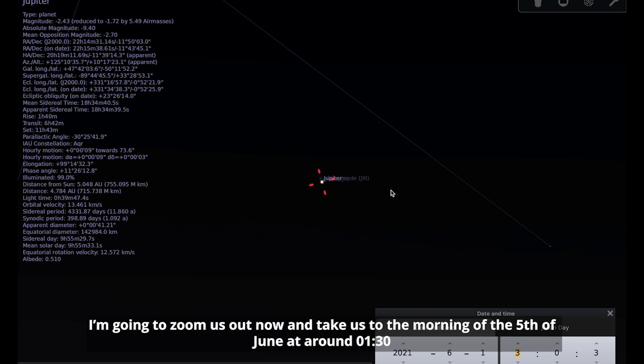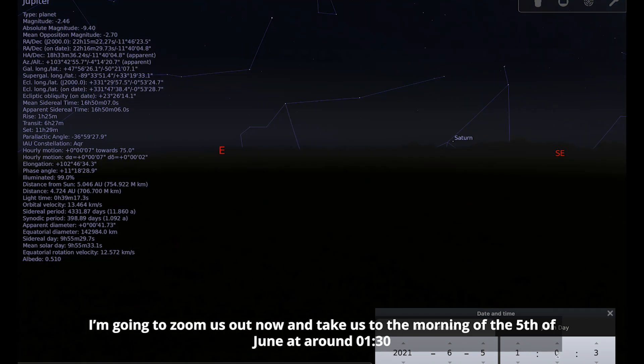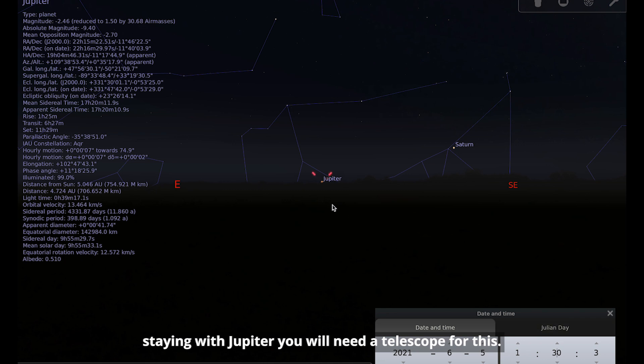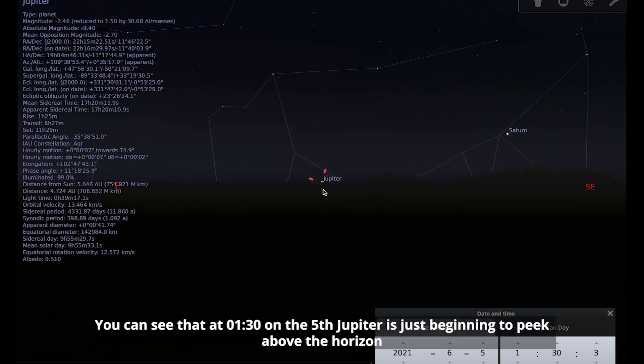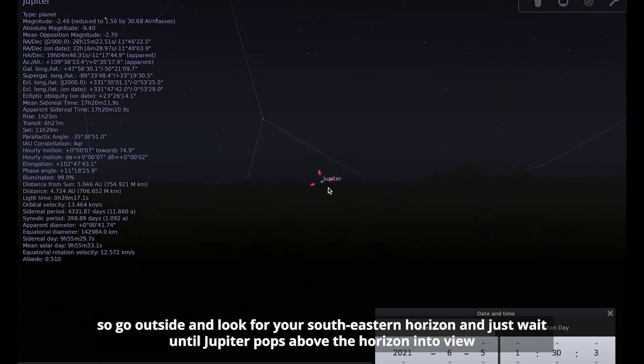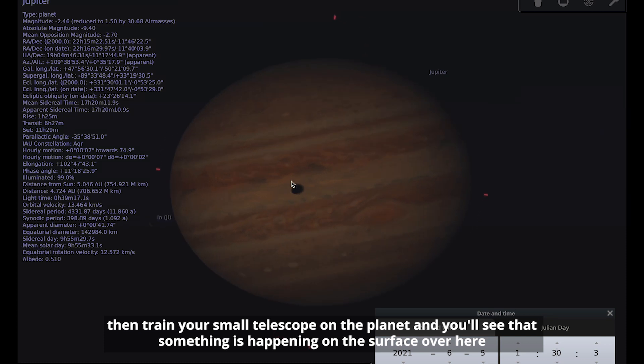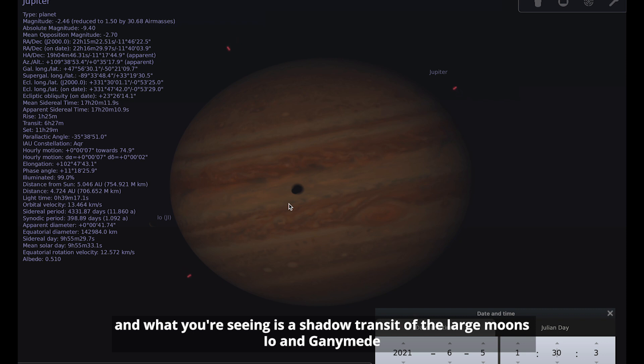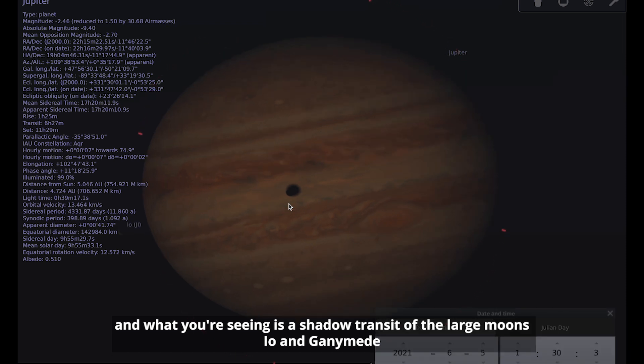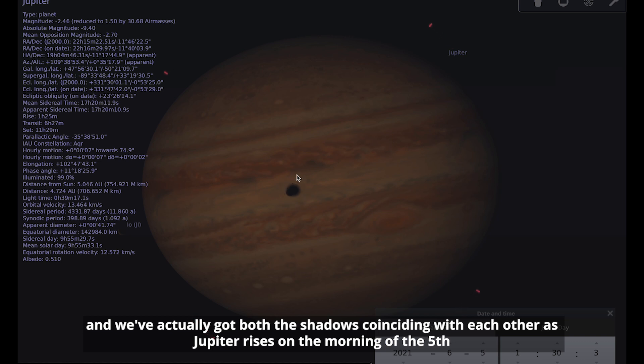I'm just going to zoom us out now and take us to the morning of the 5th of June at around half past one. You will need a telescope for this. At half past one in the morning on the 5th, Jupiter is just beginning to peak above the horizon, so go outside and look for your southeastern horizon and just wait until Jupiter pops above the horizon for you. Then train your small telescope on the planet and you'll see that something is happening on the surface. What you're seeing is a shadow transit of the large moons Io and Ganymede.